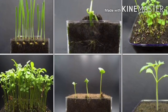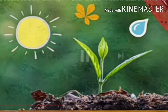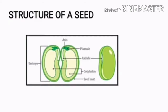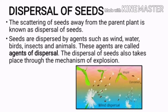In this chapter we covered reproduction in plants, new plants from seeds, and the structure of a seed. I also told you that you made a diagram of the structure of seeds too.